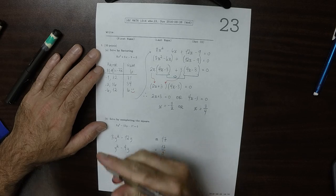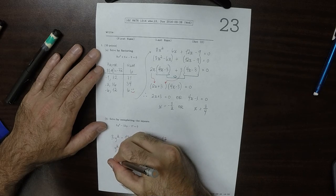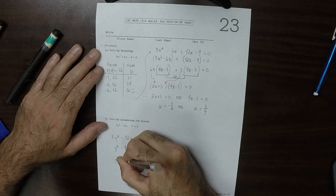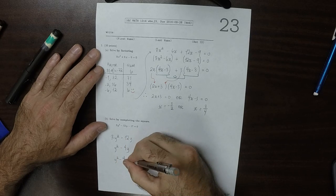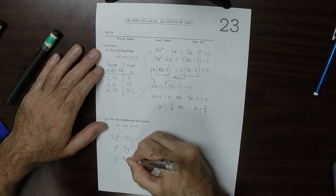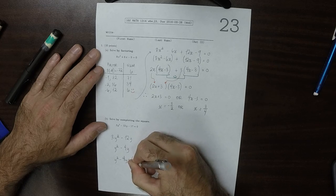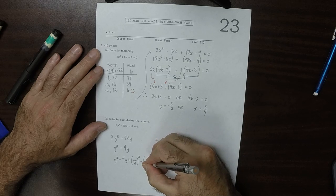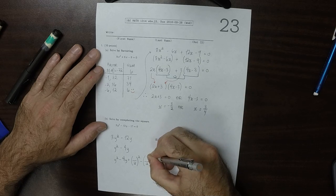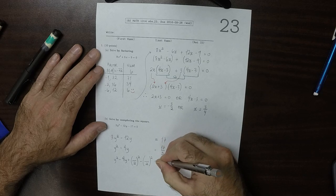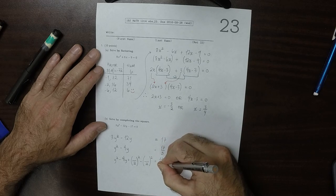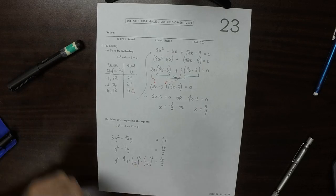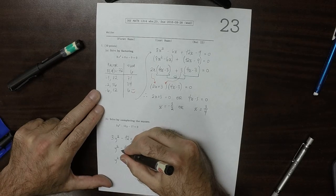Now we'll do the add 0 thing. This would be y squared minus 4y, and then plus something over 2 squared minus the same something over 2 squared, equals 17 over 3. What goes in that numerator is always this coefficient.